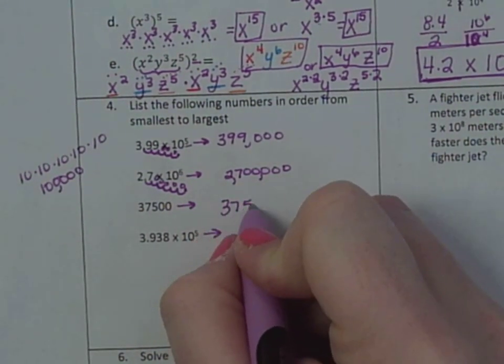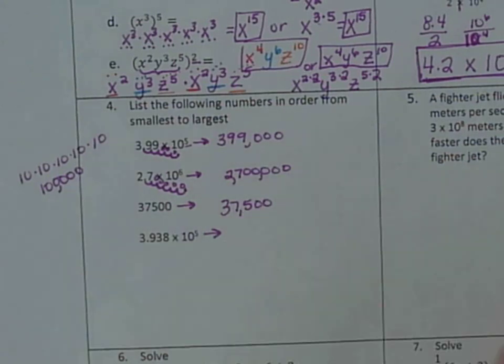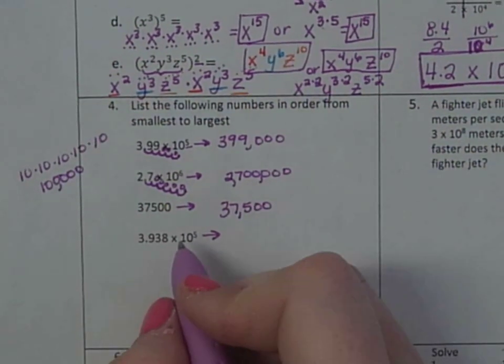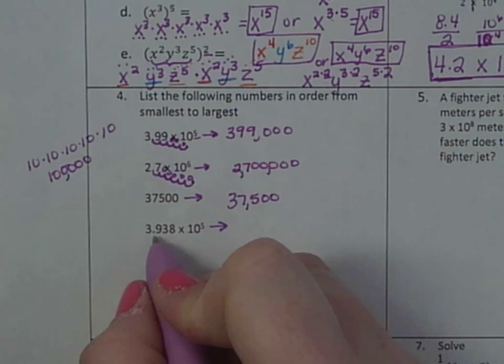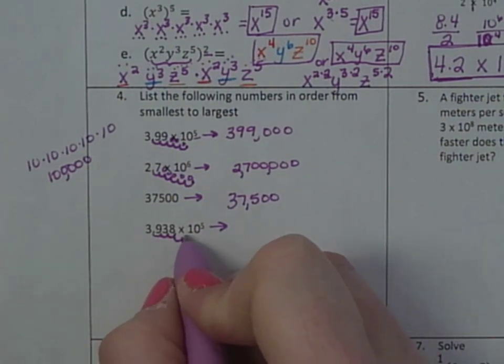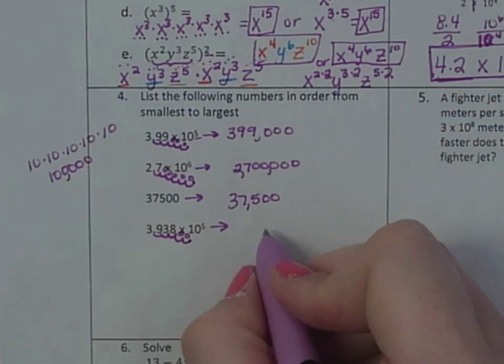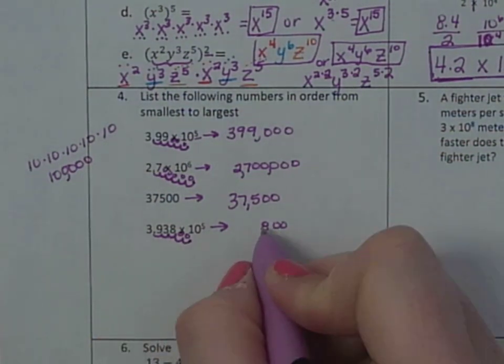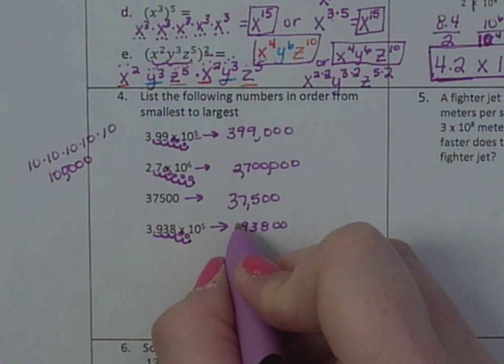This one is already in that form. So 37,500. And then this one is times 10 to the 5th. So 1, 2, 3, 4, 5, 2 zeros, and then 8, 3, 9, 3.